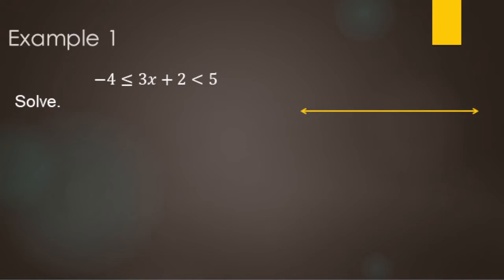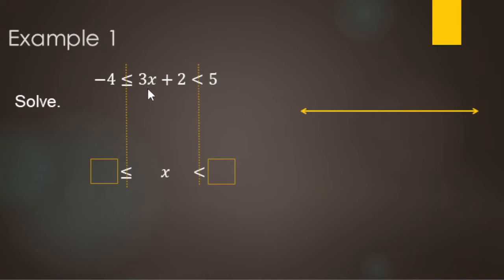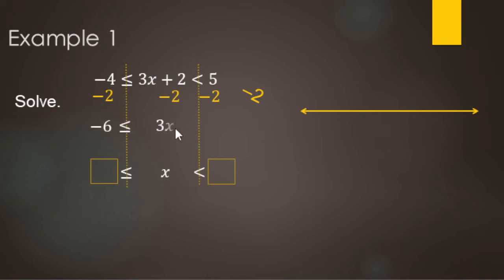Let's work this next example: negative 4 is less than or equal to 3x plus 2 is strictly less than 5. We'll solve it as written. Looking at the middle, x is being multiplied by 3 and added by 2, so we need to undo those two operations. We'll start by undoing the plus 2 with a minus 2 to all three sides. Negative 4 minus 2 makes negative 6; 3x plus 2 minus 2 leaves just 3x; and 5 minus 2 makes 3.